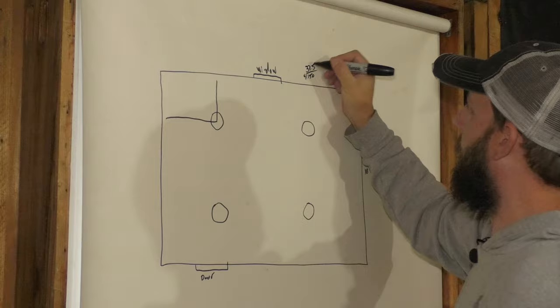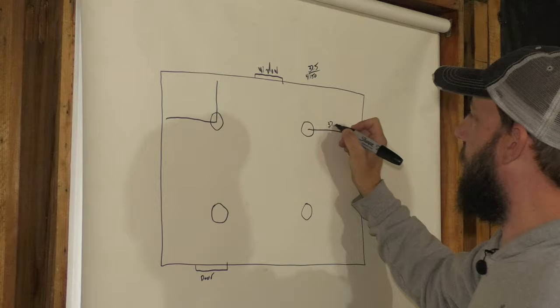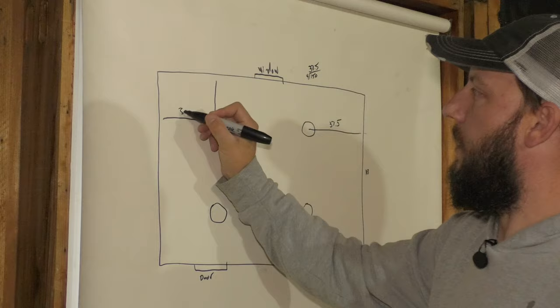That 37.5 is the distance right here to the center of the light off of the wall. 37 and a half inches or 37.5. So same over here, 37.5.